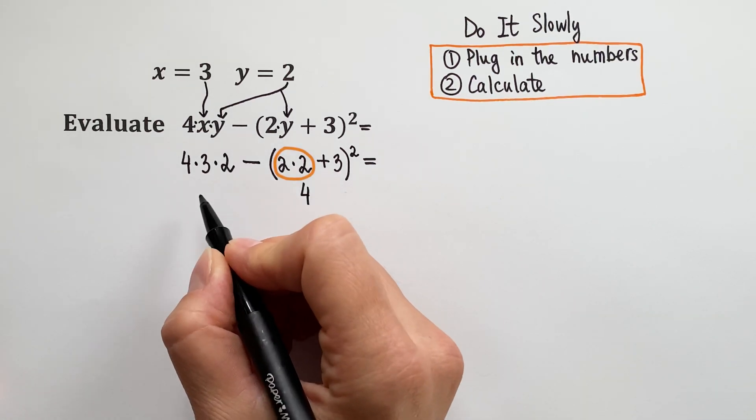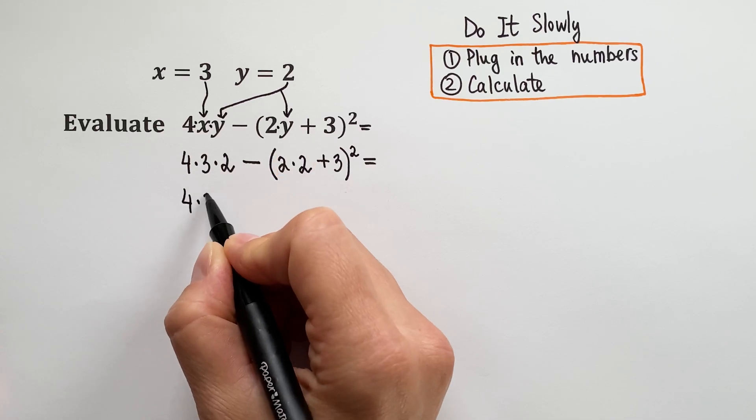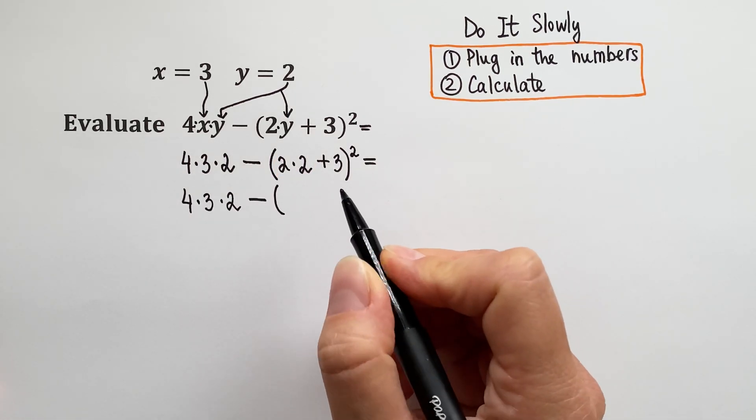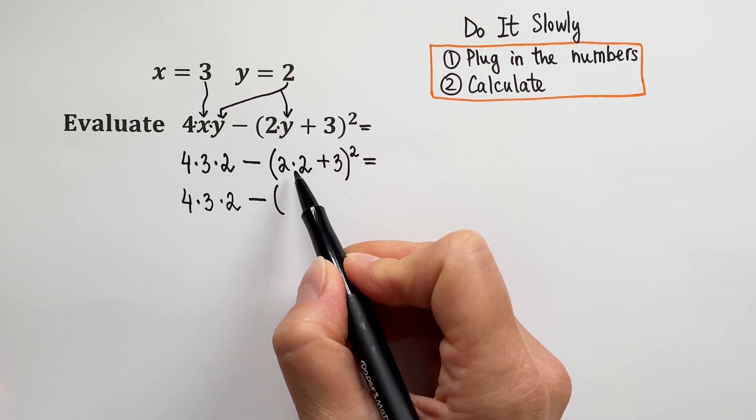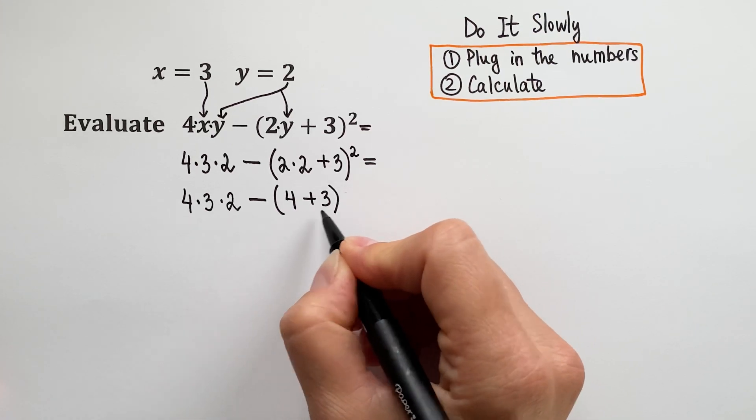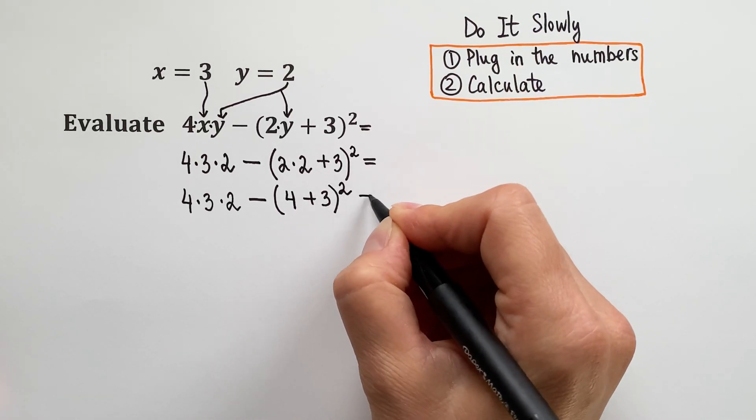2 times 2 is 4. So let me rewrite: 4 times 3 times 2 minus, and inside the parenthesis first we will do multiplication. 2 times 2 is 4 plus 3. And then this whole thing is raised to the second power.